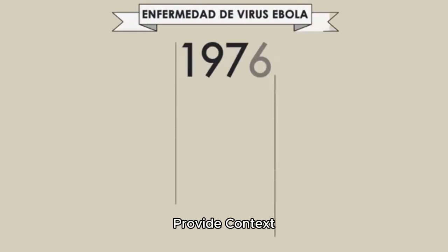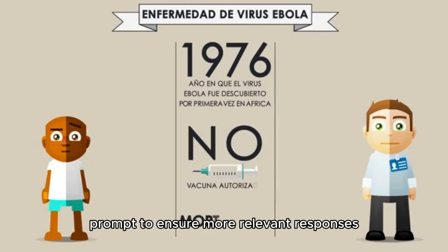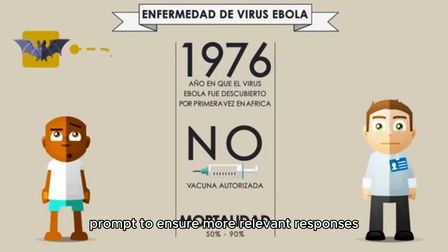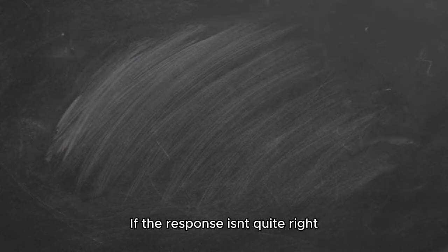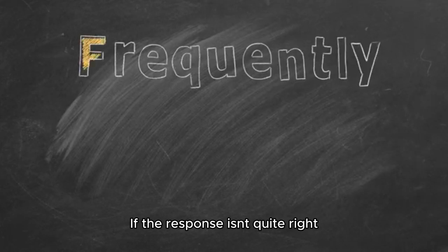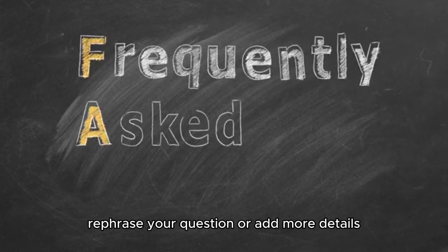Provide context: give necessary background information in the prompt to ensure more relevant responses. Iterative refinement: If the response isn't quite right, rephrase your question or add more details.